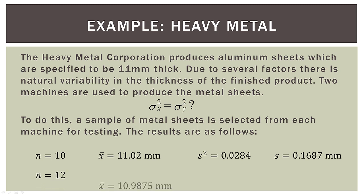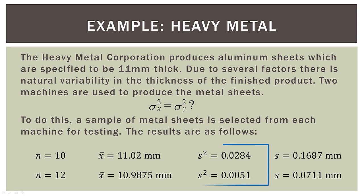Now for machine two, with a sample size of 12 sheets, our sample mean was 10.9875 millimeters. Our sample variance was 0.0051. And our sample standard deviation was 0.0711 millimeters. And of course, we are interested in the two sample variances.